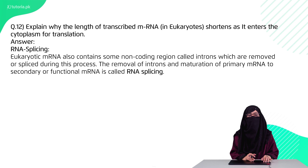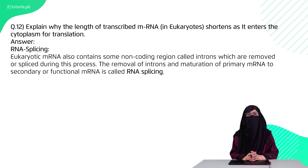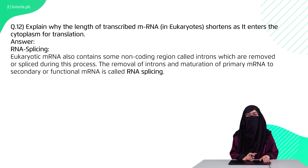Question 12 is: why is the length of messenger RNA shortened as it enters the cytoplasm? Because the messenger RNA that is created contains many introns and exons. After splicing out the introns, the functional messenger RNA that is created is smaller in size.